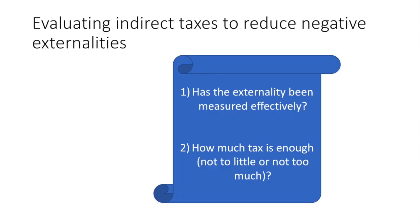To evaluate indirect taxes as a solution to reducing negative externalities, we have to answer two questions. First, how has the value of the externality been determined? In the case of something like air pollution, how do you place an accurate value on the damage that has been done? Some effects will not appear immediately — in the short run, serious diseases may impact people's health in the long run. How do you measure that?